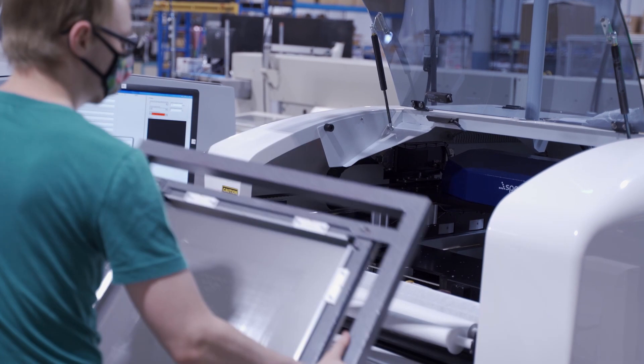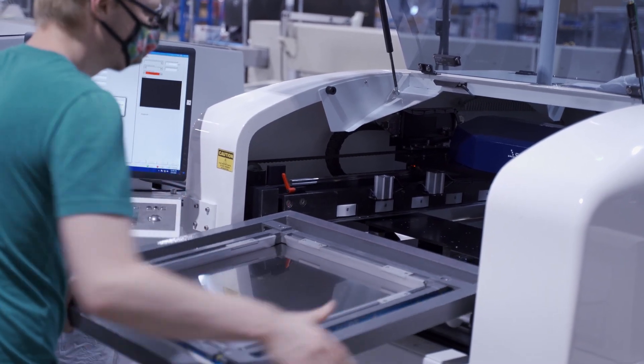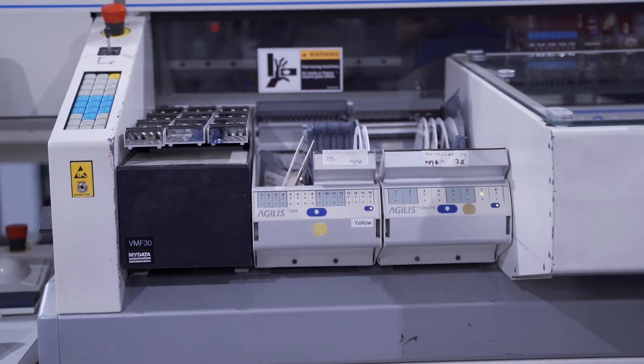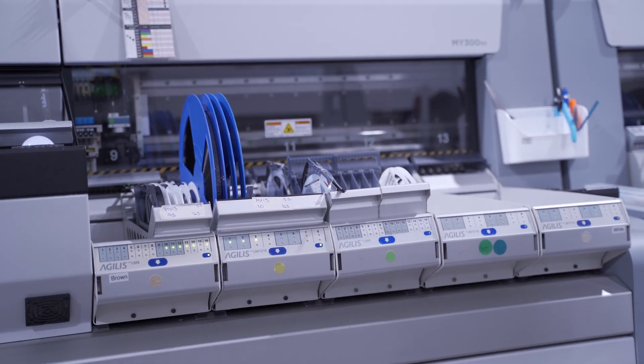The production line's automated stencil printer uses the same stencil we prepared for the NPI line. The pick and place machines use the same magazines and feeders, but are configured to accommodate more of them.